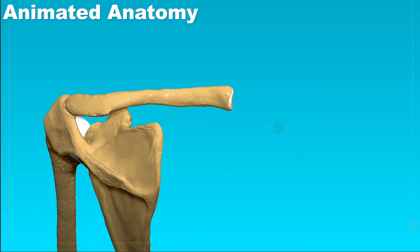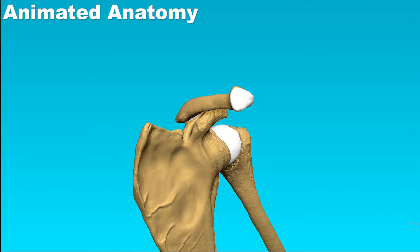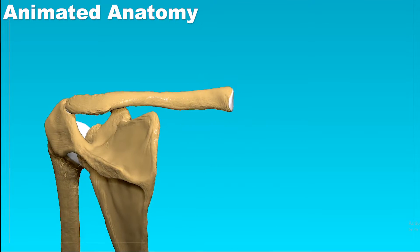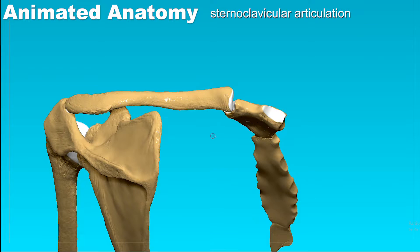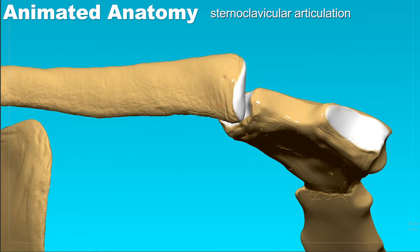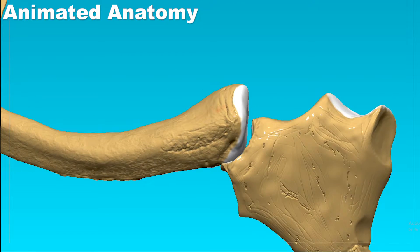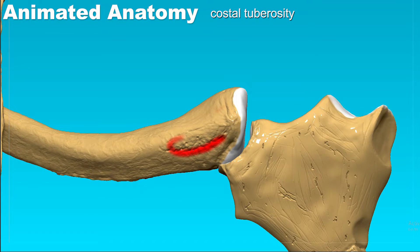The sternal end carries an articular surface which creates the sternoclavicular articulation. If we get just underneath the clavicle, we can see the costal tuberosity. This is where the costal ligament attaches.